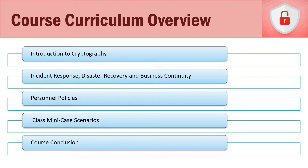Section sixteen is an introduction to cryptography, or in other words, encryption. This is a very lengthy section — you'll learn how encryption works, symmetric and asymmetric encryption, hashing algorithms, digital certificates and certificate authorities, and use cases such as email encryption, file system encryption, and VPNs. Section seventeen covers incident response, disaster recovery, and business continuity. It's not a matter of if an incident will occur, but when, so we discuss methodologies for incident response, developing a disaster recovery plan, and a business continuity plan.